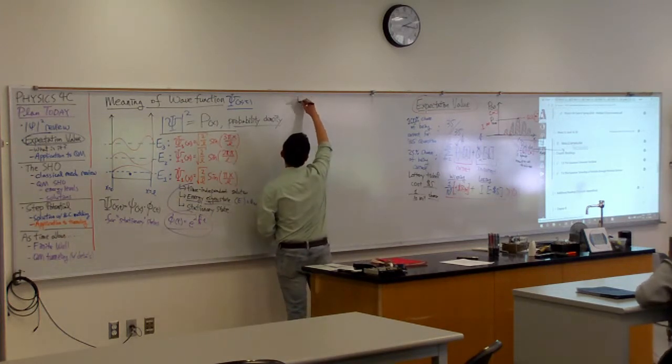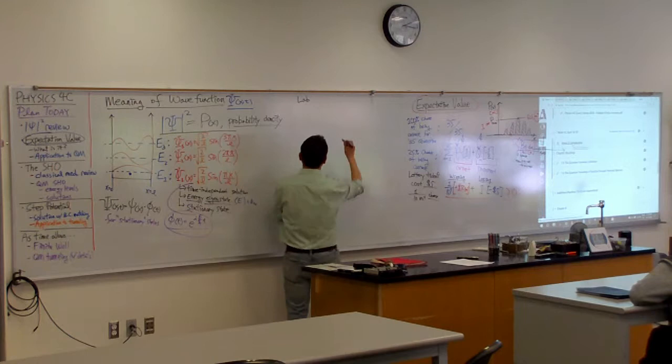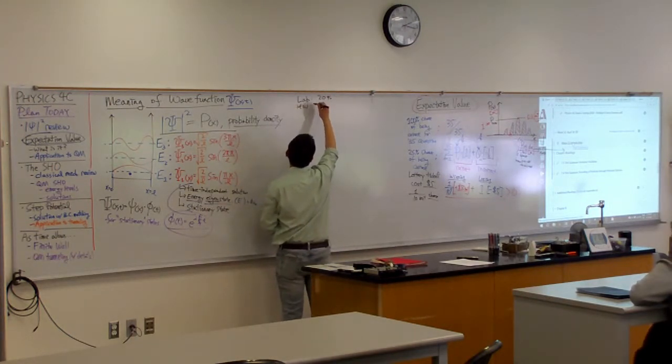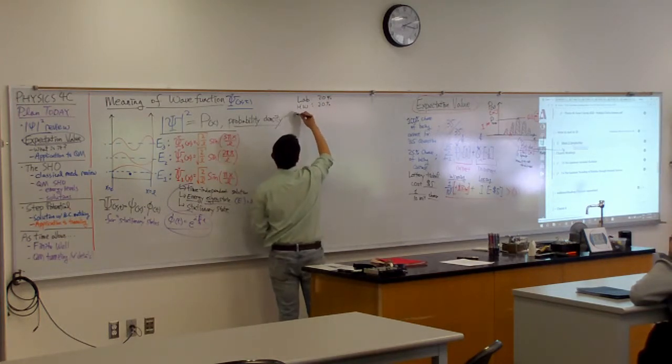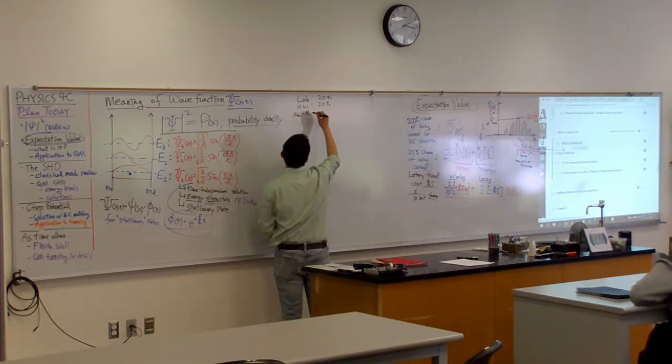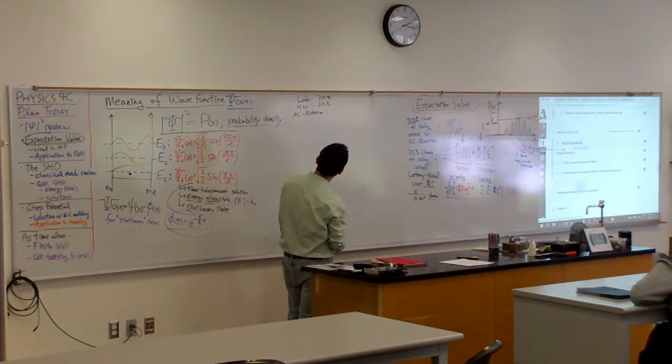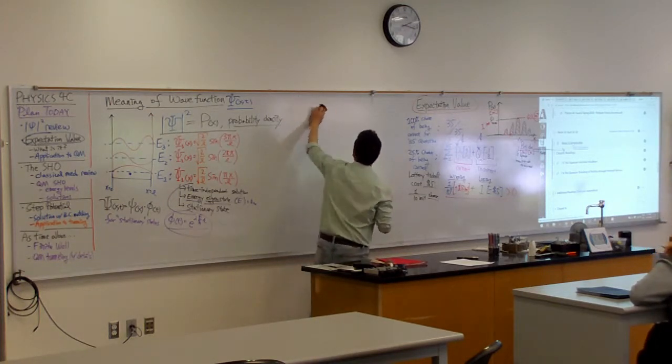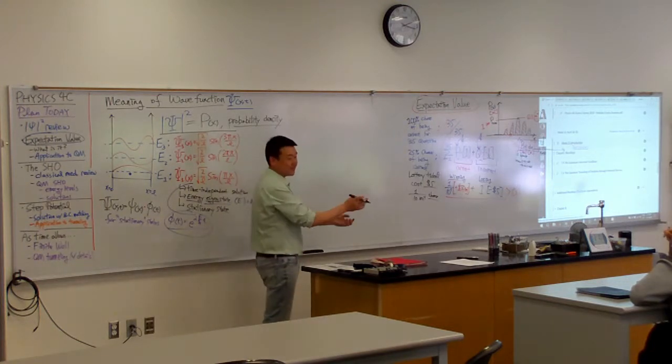The lab is worth, is it worth 20%? It should be worth 20%. So lab is worth 20% of grade, homework is worth another 20% of grade, multiple choice portion of midterms, are worth, okay, this is not a good example. Let me give you the example for my other class, physics 10. They have more interesting breakdowns.